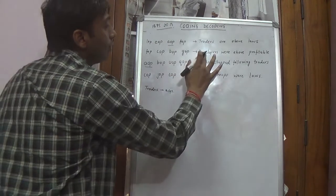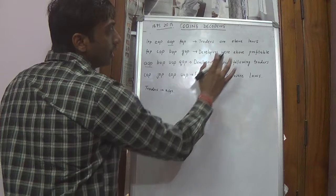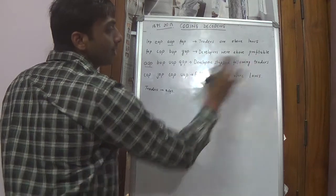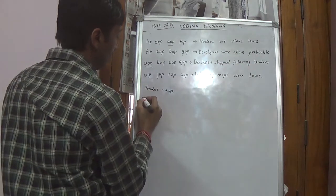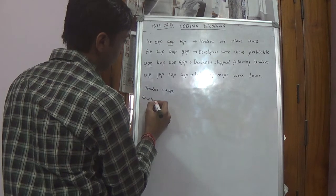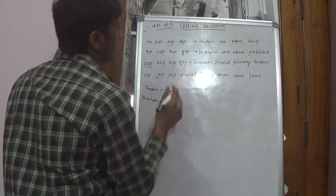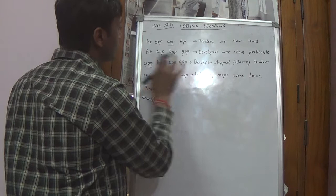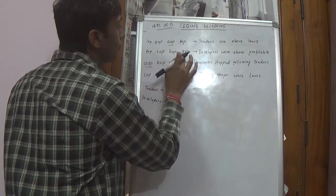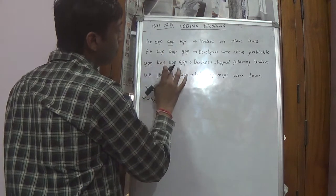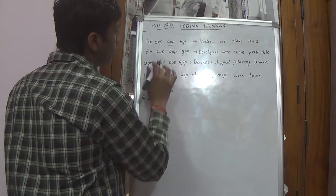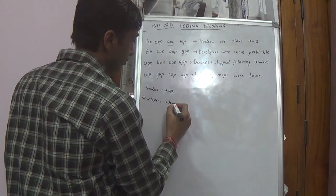Similarly developers. Developers is in this group. Who are above profitable stocked foreign traders. No common words. Only developers. Now we see developers. These two. FOP, COP, BOP, GOP, AOP, BOP, UOP, QOP. So the common word is BOP. So developers is BOP.